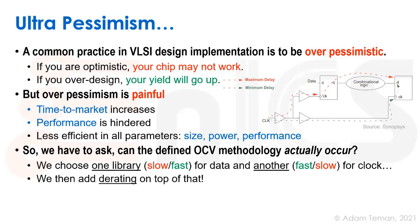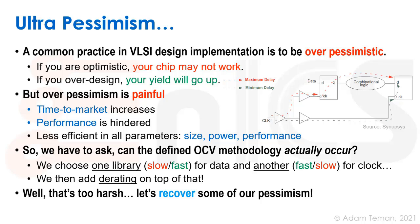So we have to ask if the defined OCV methodology can actually occur. In some cases, we'll choose one library for data and another for the clock — that's one of the methods used, though it doesn't really make sense. You can also add derating on top of that. It's some factor multiplied on the delay of cells that could be right next to each other, assuming very different temperatures, on-chip voltage, or process variation. This is an over-pessimistic case that was hard to meet from around 130nm down to around 65nm. So let's try to recover some of that pessimism.